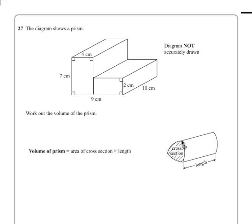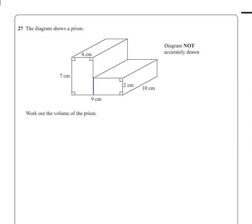The diagram shows us that the cross section is just the shape that is at the end of a prism. So what we need to do is to find the area of this front shape.